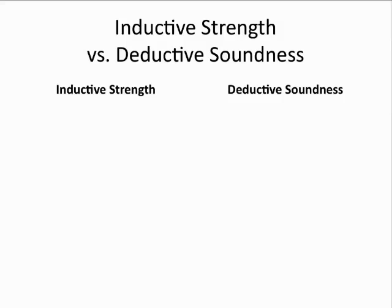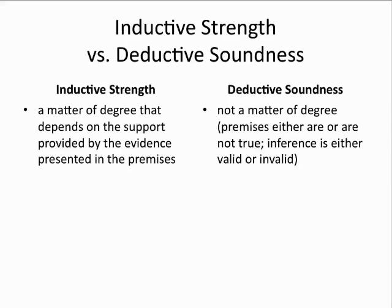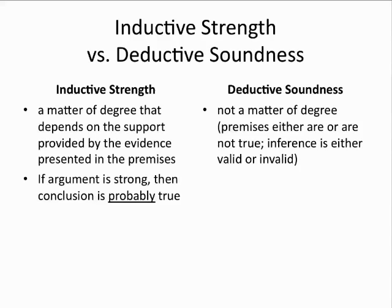Inductive strength is a matter of degree, so it's relative to the amount of evidence the premises offer. Deductive soundness is not a matter of degree — it's absolute. If an induction is strong, then the conclusion is probably true, whereas if a deduction is sound, then the conclusion is necessarily the case — that is to say, it must be true.